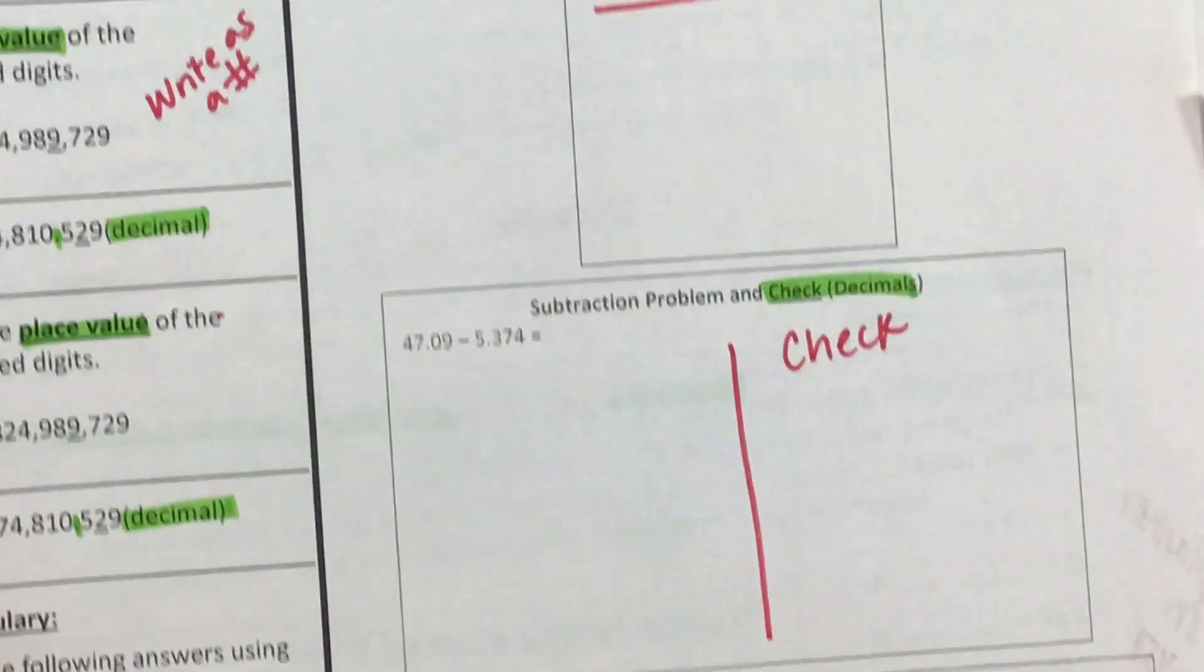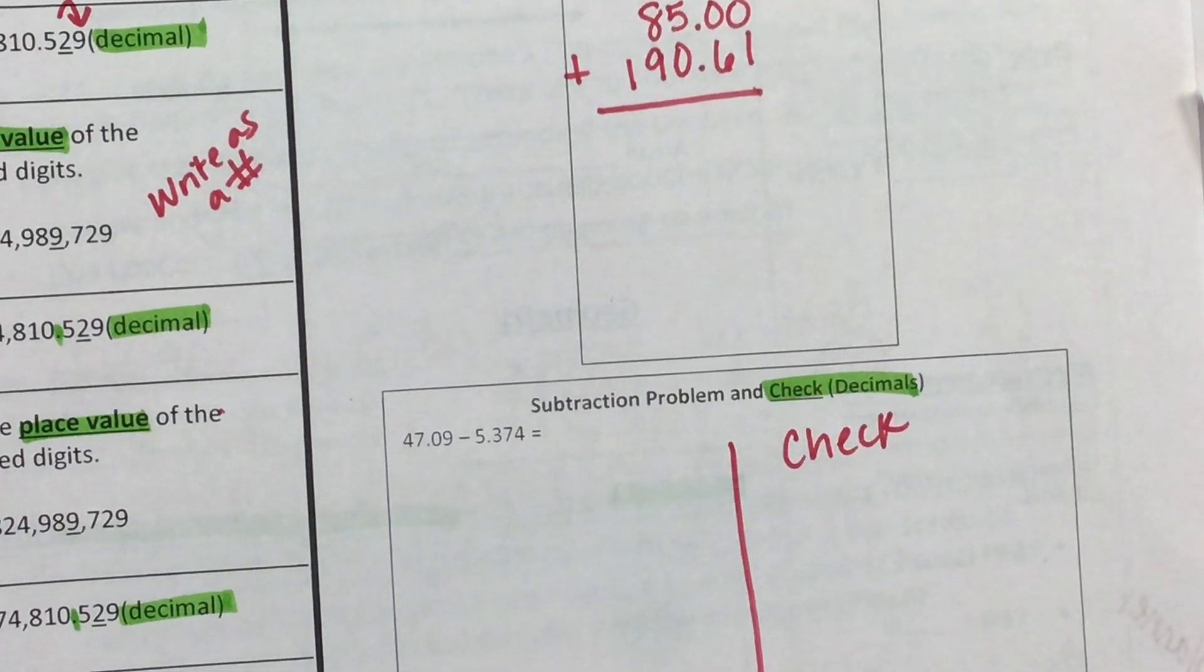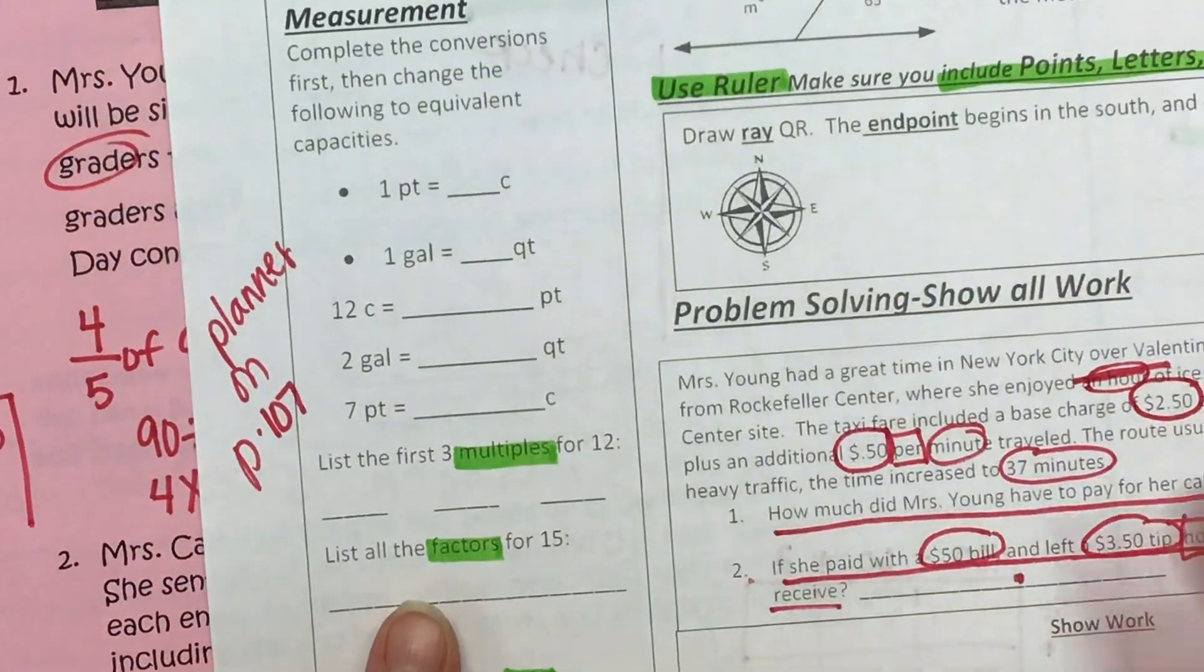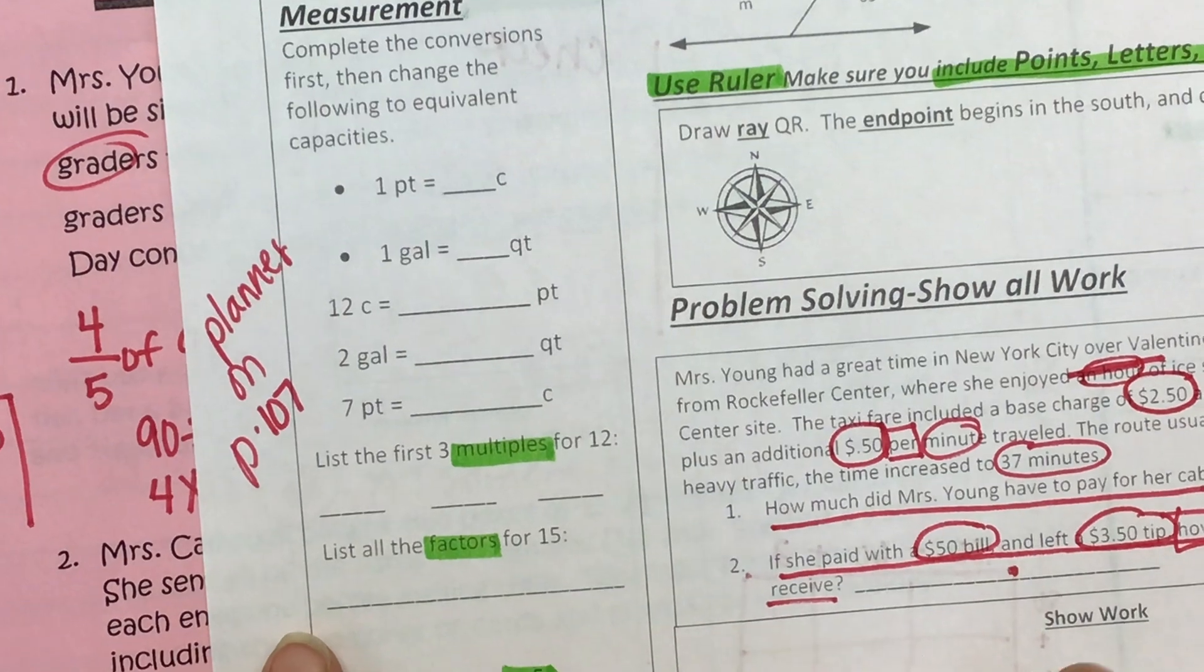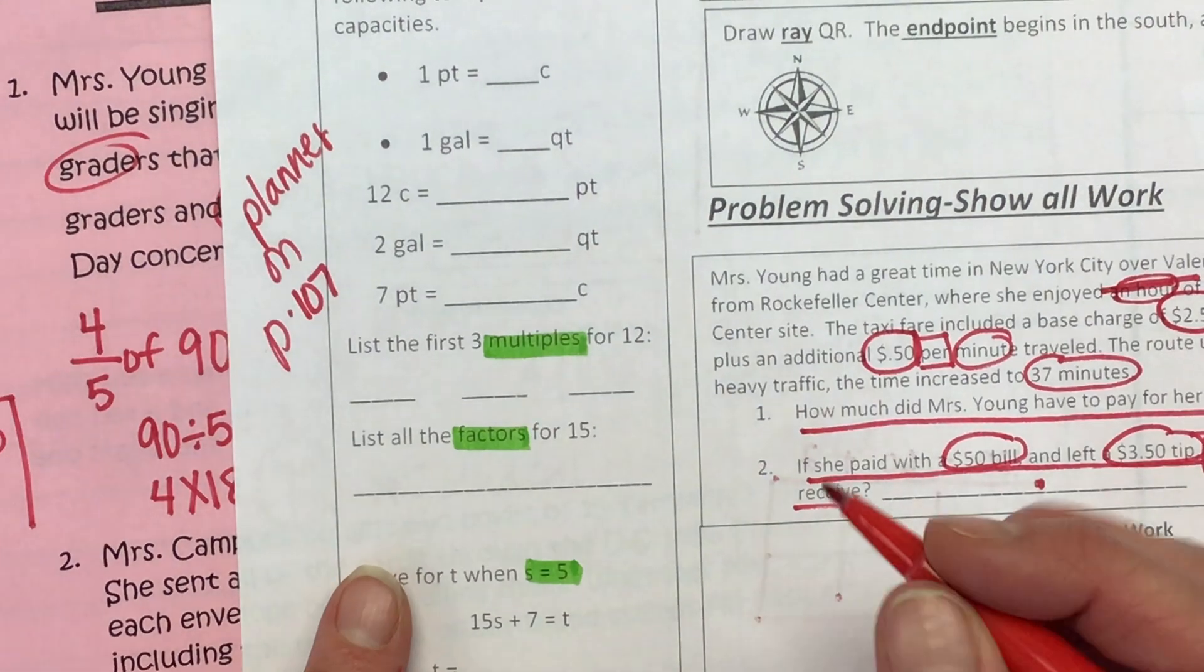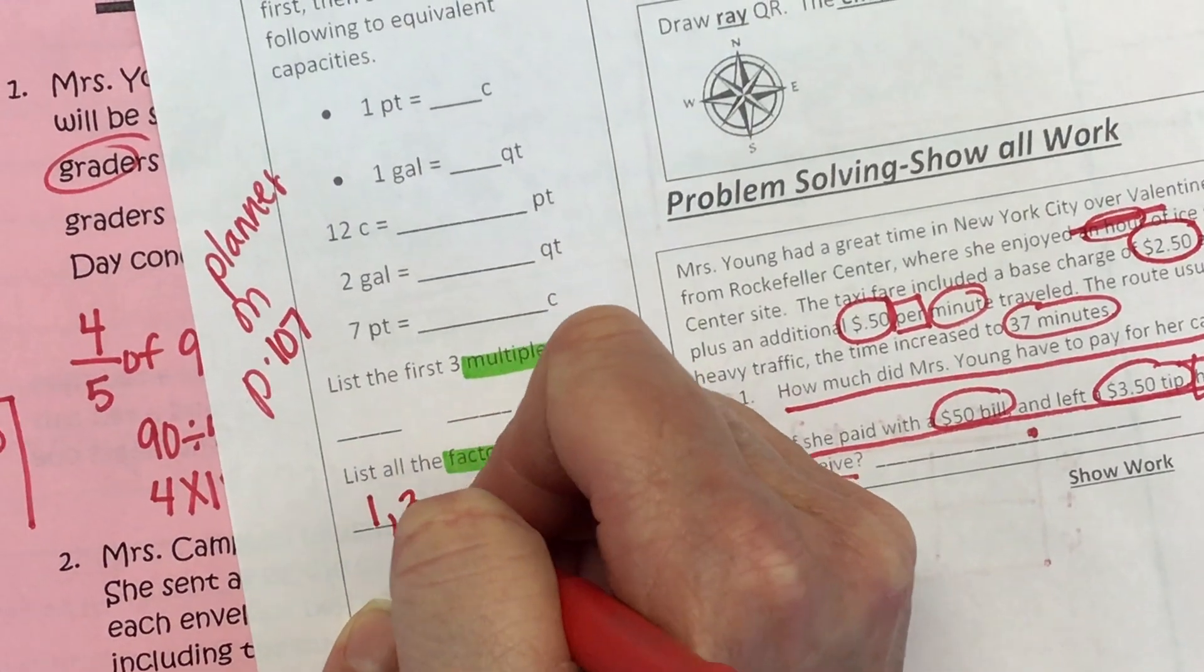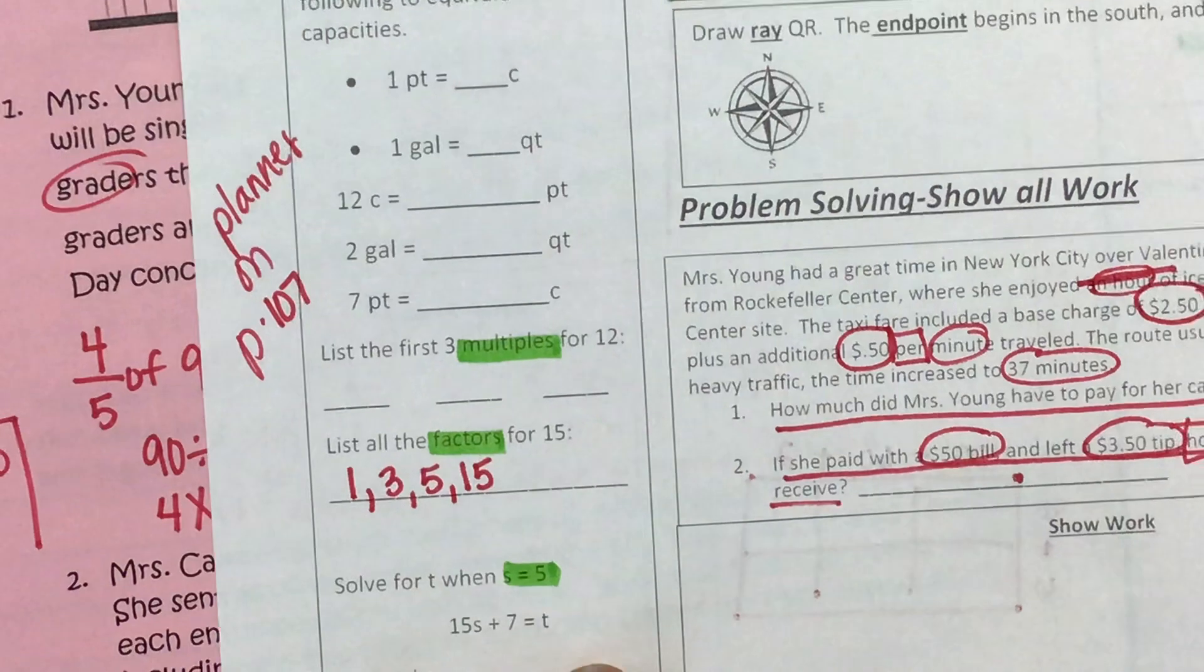I will take three freebies. Raise your hand if you would like a freebie. The factors are the numbers that we multiply to get a certain product. So what can I multiply to get 15? One and 15. What else? Three and five. And usually we need to put those in numerical order.